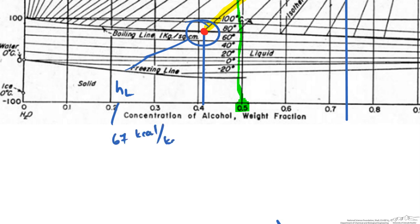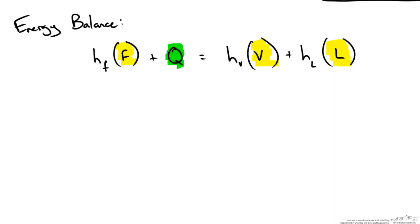So let us go ahead and plug these values into our energy balance and solve for Q. So the enthalpy of our feed was 450 kcal per kg. And we know we have 100 kg per hour plus Q has to equal the enthalpy of our vapor which we said is 357 kcal per kg times our vapor flow rate of 25 kg per hour.